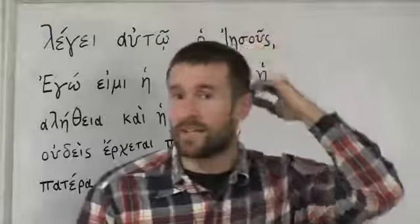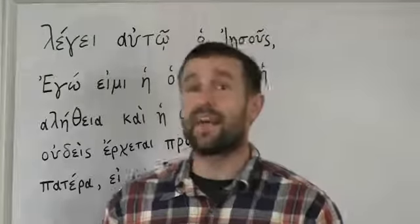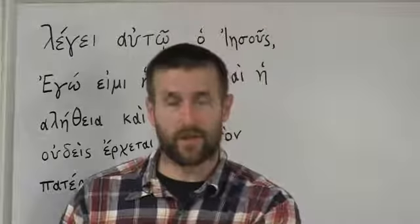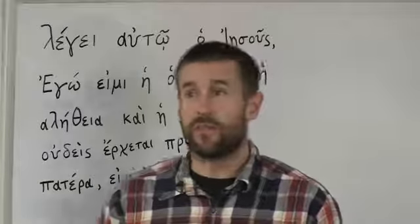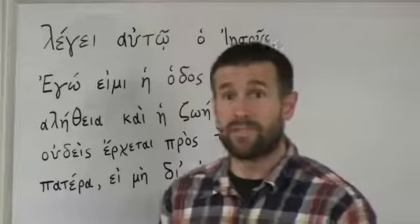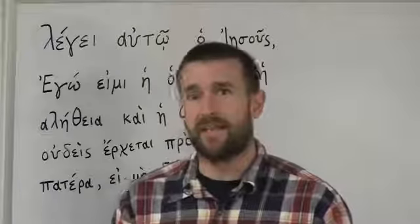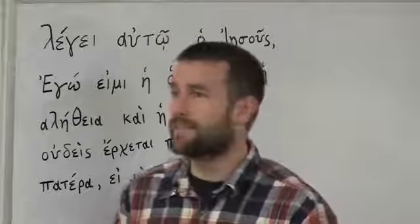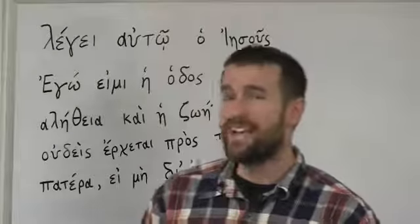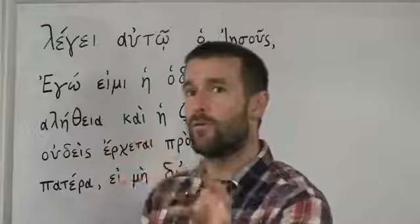In the last video, we talked about the accusative case and the nominative case. The nominative case is the subject of the sentence. The accusative case is the direct object, and it's also used with certain prepositions. Well, there's another case called the dative case, which is used for indirect objects and also with many prepositions. The indirect object is what we'd say in English as 'to whom' or 'for whom.'